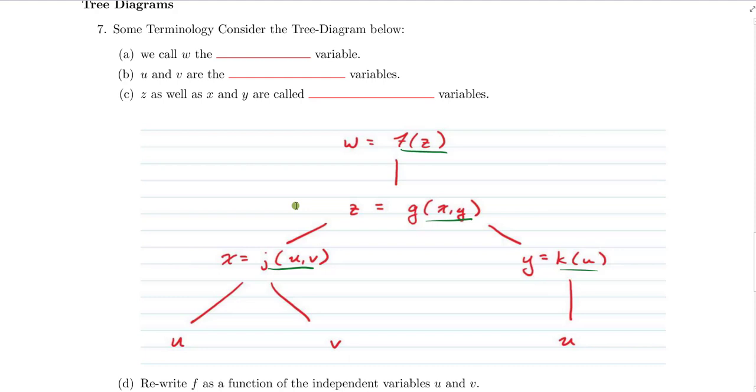But there is some common terminology I want to make sure we're all clear of. First of all, the purpose of a tree diagram is to illustrate the relationship between all these variables. And so we would call u and v the independent variables here. They are ultimately what all of the other variables depend upon. While the variable w depends on the variable z, and the variable z depends on the variables x and y, everything depends first off on the variables u and v. So those are the independent variables in this problem.